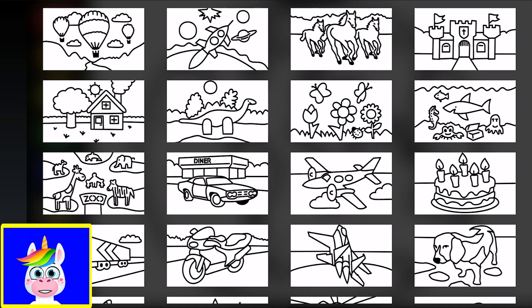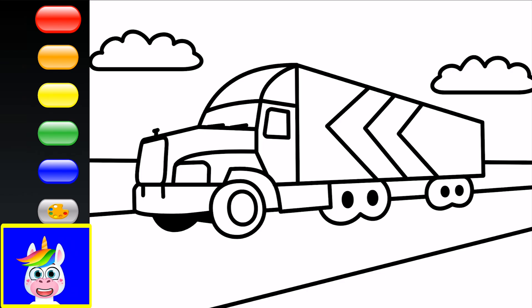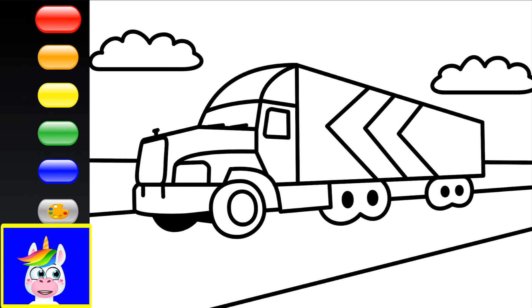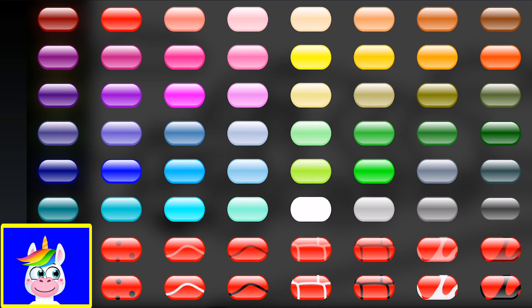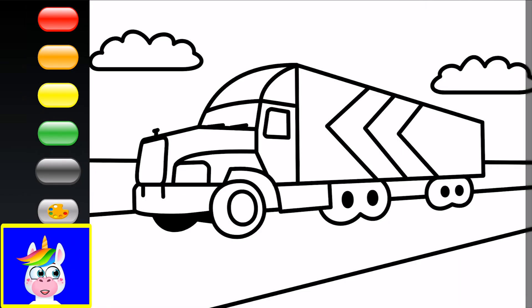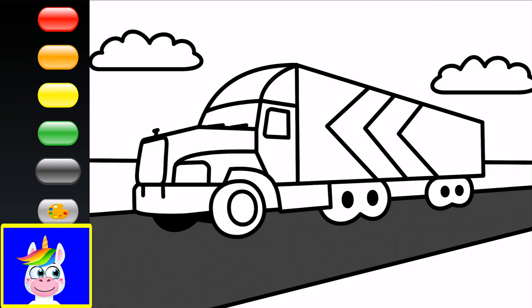Next — a truck! Let's color the truck. The truck is on a road — I think that's a dark gray, like tarmac.